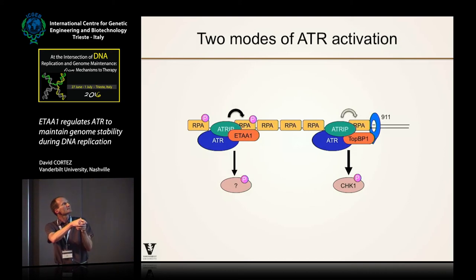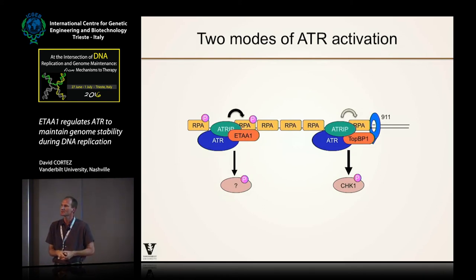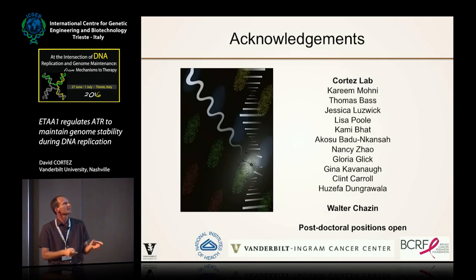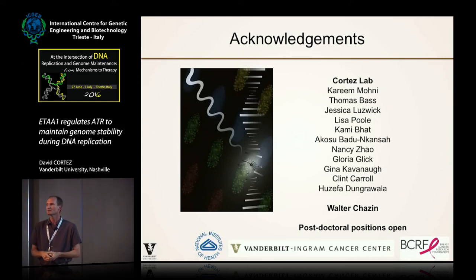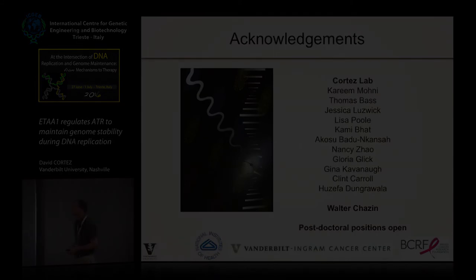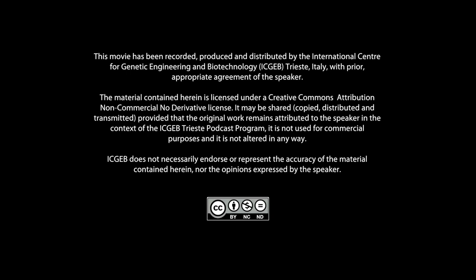To summarize: ETAA1 is an RPA-interacting protein that localizes to stalled forks, where it can directly bind and activate the ATR complex. It is particularly important for RPA phosphorylation and is important during normal replication and in response to replication stress. It is distinct from the other activating pathway, the ATR-TopBP1 complex. The primary person responsible for this work is a student in the lab, Thomas Bass, who did almost all of the work on ETAA1. Walter Chazin's lab helped with the NMR spectroscopy work mapping the RPA-interacting motifs.